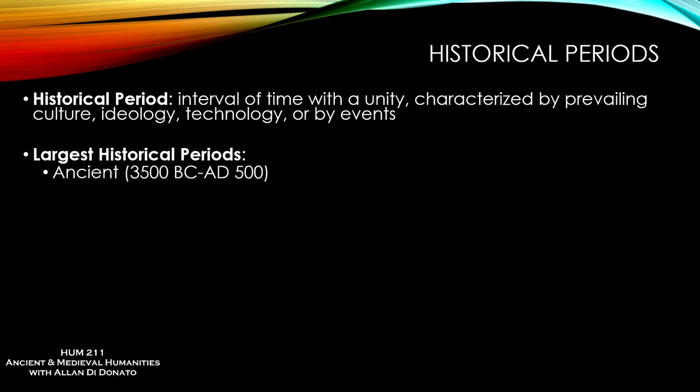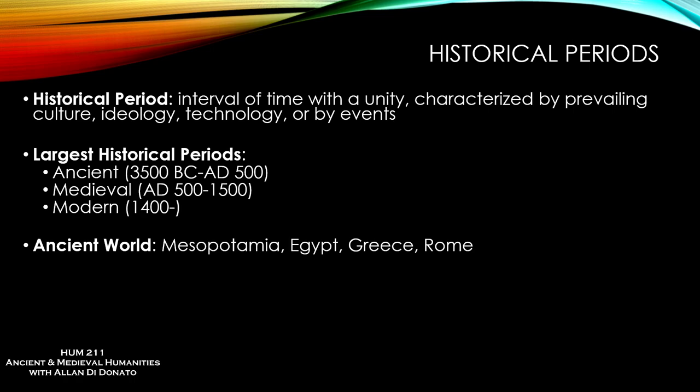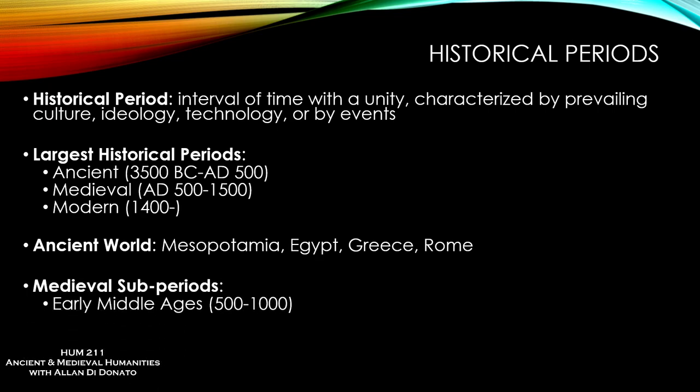The largest periods are the ancient, the medieval, and the modern. Prior to 3500 BC, you're essentially in prehistory — prior to writing. The ancient world we'll say is 3500 to about 500 BC, and we're going to cover that time period in this class as well as part of the medieval world. The medieval world is basically 500 AD to 1500. As for cultures in the ancient world, we'll be restricted to Mesopotamia, the near East, ancient Greece, and Rome. In the middle ages, we'll deal with the early and high middle ages. We will not be dealing with modern humanities — Renaissance forward — though the Renaissance reflects a lot of ancient Greek and Roman influence.